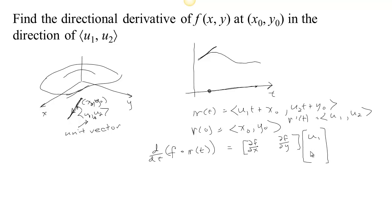So the rate of change of this composition, in other words, the slope of this function as I change t, I'm just traveling somehow along my surface here in a straight line underneath it.